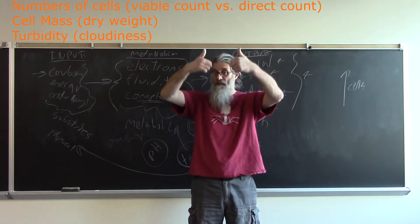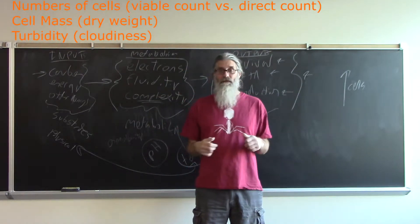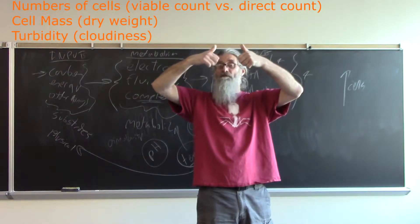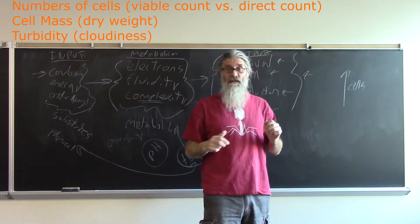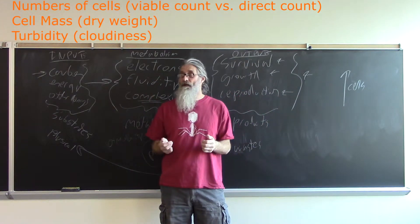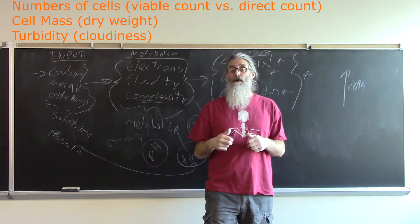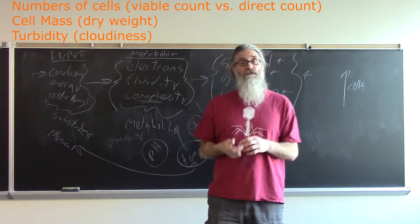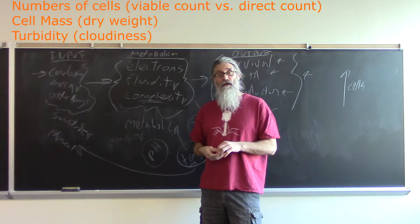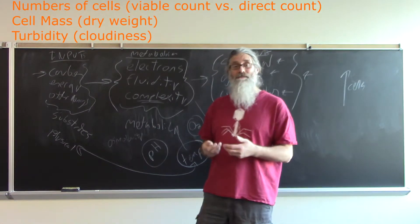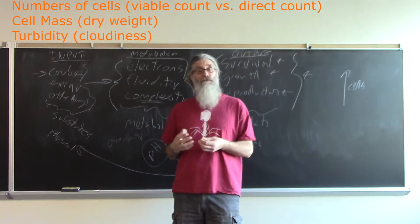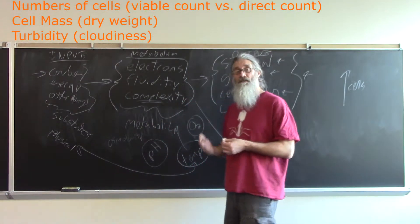So with more cells you have an increase in the number of viable cells, usually an increase in the total amount of mass that's associated with the cells as opposed to the surrounding fluid, and also an increase in the turbidity of the culture. These various ways of keeping track of what's going on in the culture allow us to keep track of microbial growth.